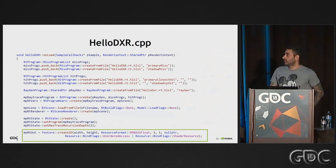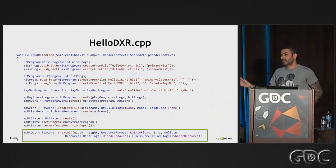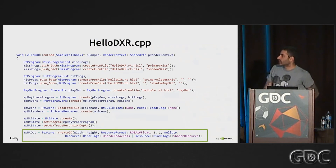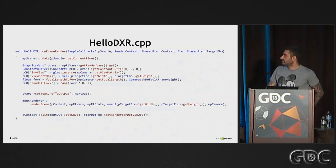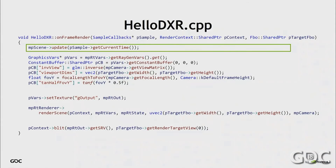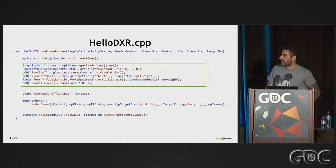This is everything we need to do in onLoad. This is going to create our shader binding tables, our resources, our acceleration structures, and compile all the shaders. This is our onFrameRender. First thing we want to do is update our scene in case we have dynamic objects. It's going to move the camera and animate any skinned objects we have in the scene.